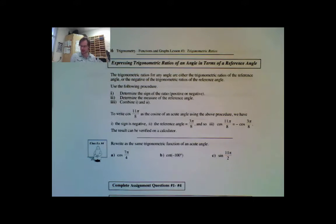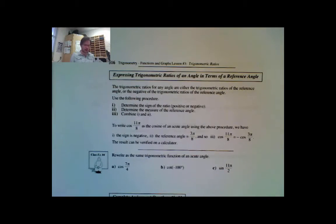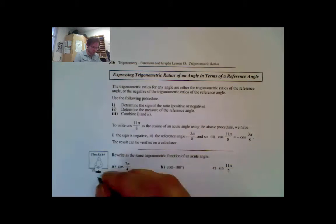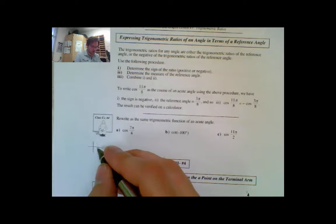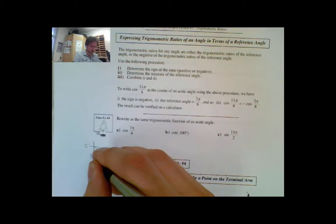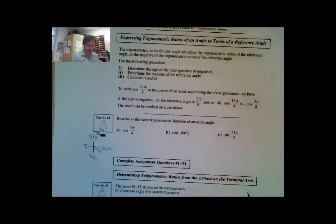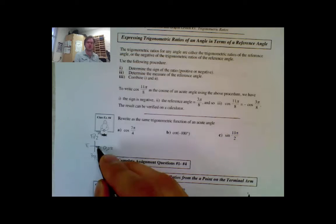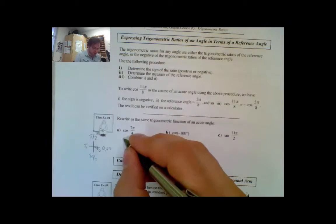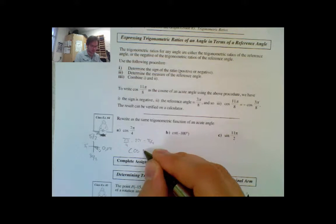Example 4 asks us to rewrite trig functions as an acute angle. For cosine 7π/4: drawing this out, 7π/4 is one quarter short of 2π, so it's in quadrant 4. Cosine refers to x, and my x in quadrant 4 is positive. I calculate 2π − 7π/4 = π/4. So cosine 7π/4 equals cosine π/4.